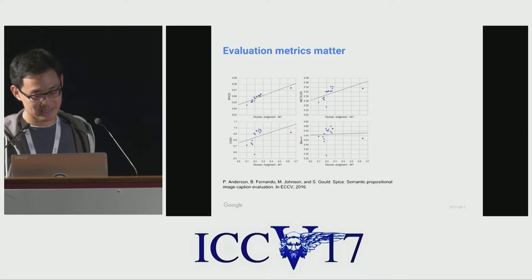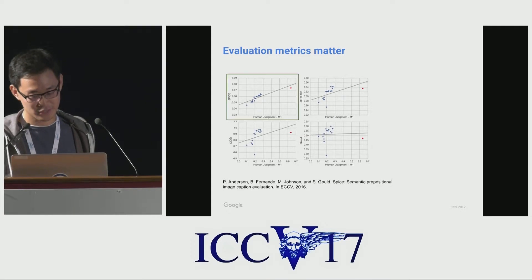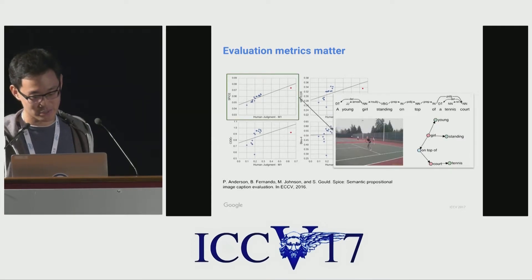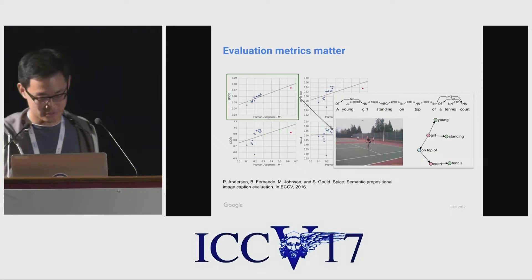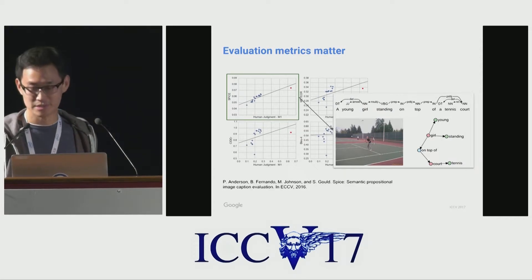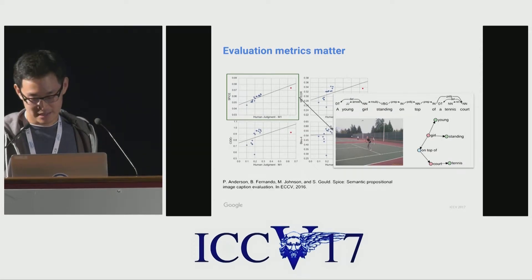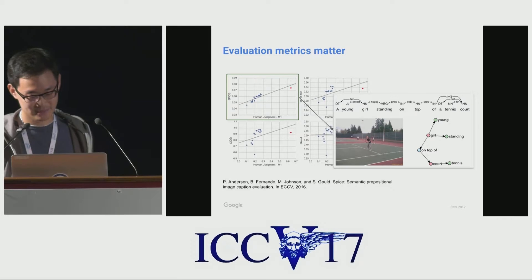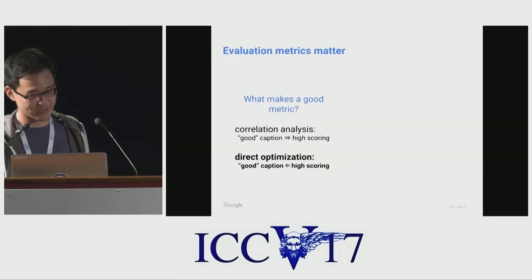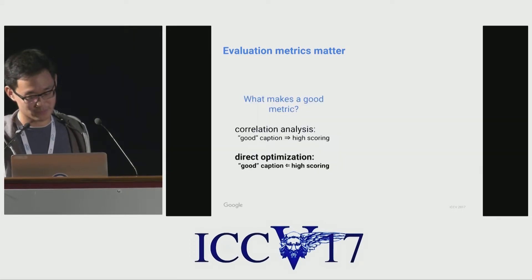This also shows in how existing syntactic metrics have been ranking humans below automatic models. Last year at ECCV, Anderson and others showed this and proposed SPICE, which is a new metric that parses captions into scene graphs and then compares graphs instead of captions. This is a great idea, and they showed that SPICE correctly ranks humans above automatic systems.